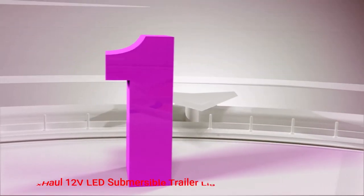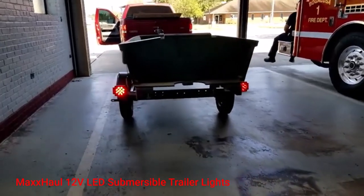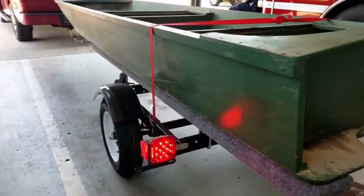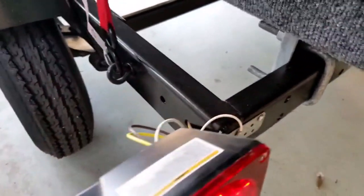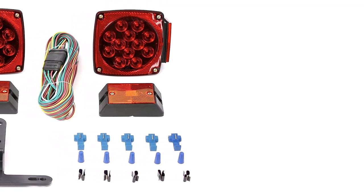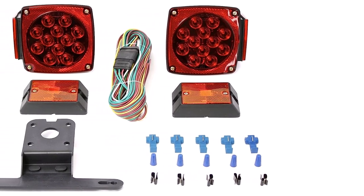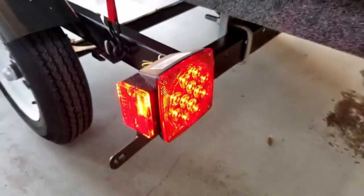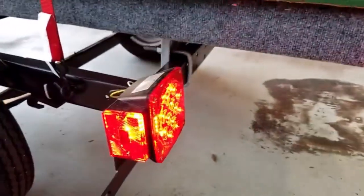Number 1: MaxHall 12V LED Submersible Trailer Lights. If you're looking for a reliable light kit that is easy to install, MaxHall 70205 LED Trailer Lights are a great option. The package contains everything you need to mark your trailer properly: backlight, side light, license plate bracket, as well as all the hardware including screws and wires.